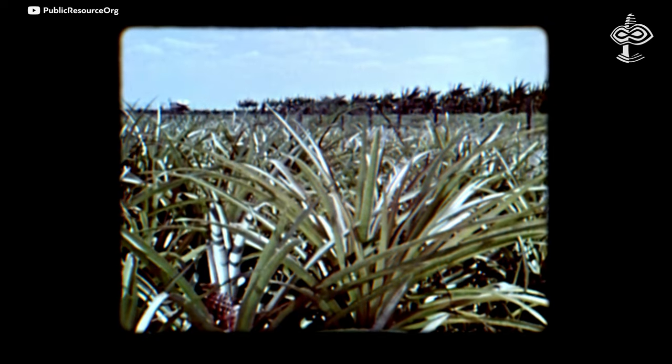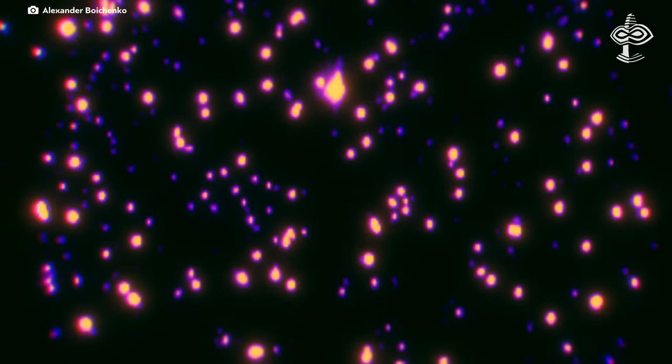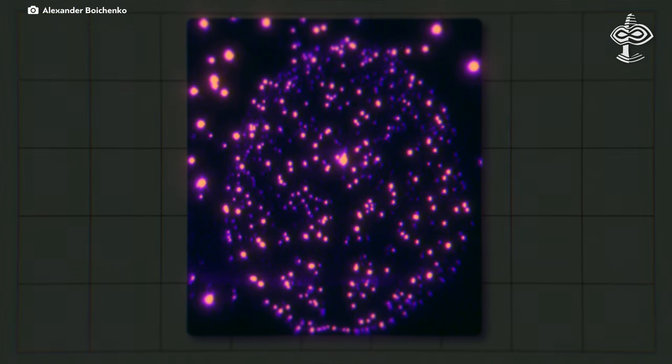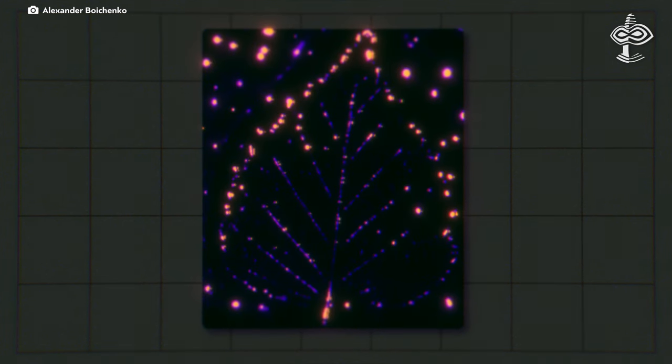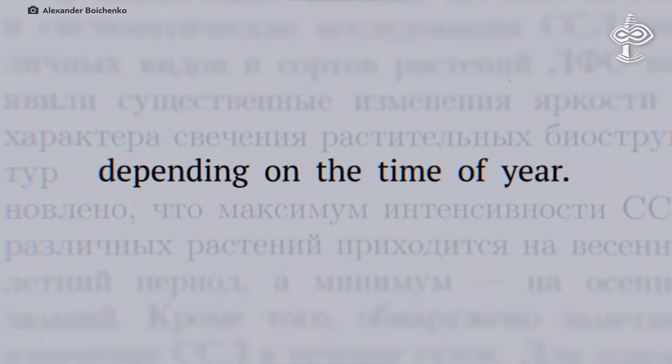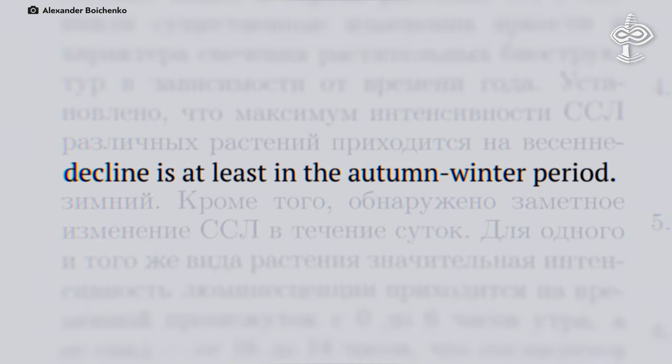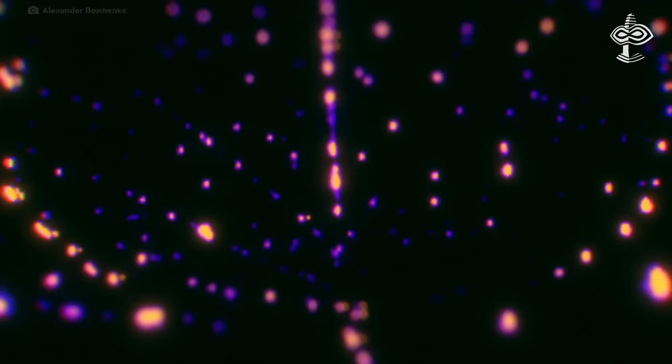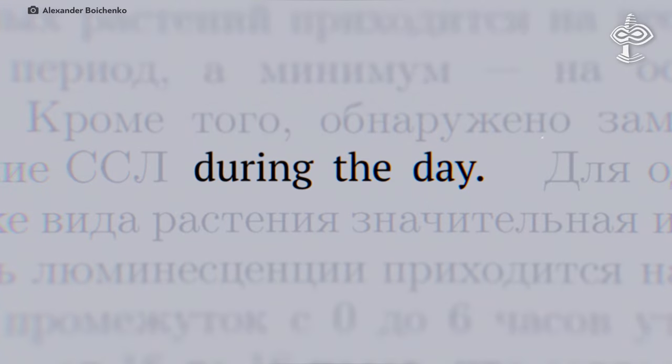The long-term studies of biophotons and various species and varieties of plants have revealed significant changes in the brightness of the glow of plants' biostructures depending on the time of year. It is established that the maximum intensity of biophotons of various plants relates to the spring-summer period and its decline is at least in the autumn-winter period. In addition, a noticeable change in the intensity of biophoton radiation was detected during the day.